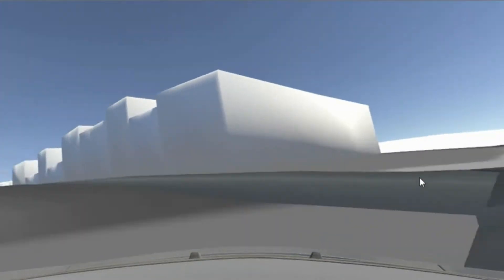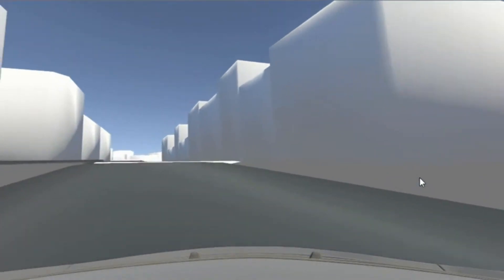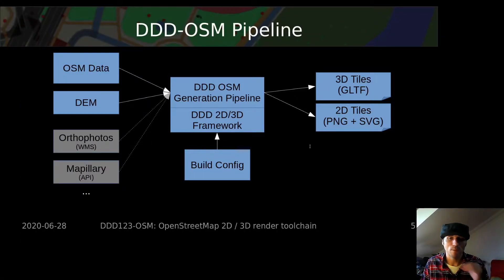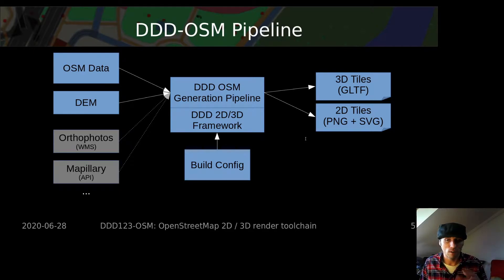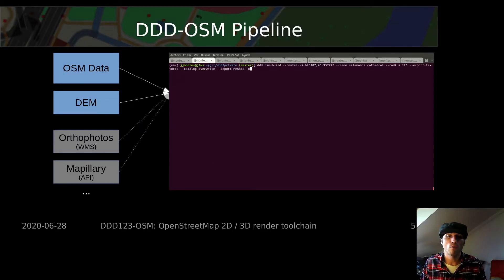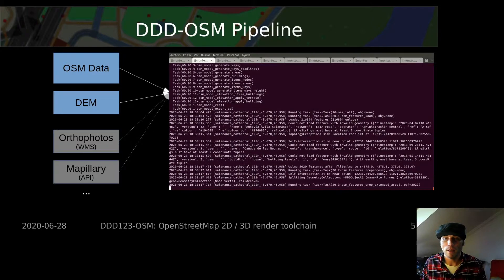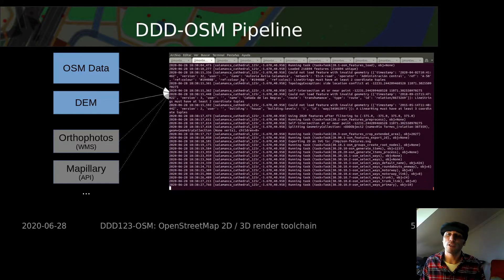Fast forward a few months, and today this toolset looks like this. At the bottom of the stack we have this 2D and 3D generation tool called DDD. It is a Python package built on top of well-known libraries such as NumPy, Shapely and TriMesh, among others.